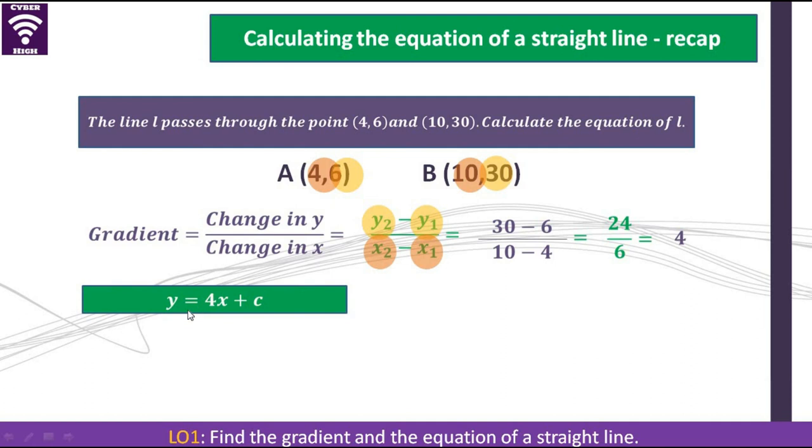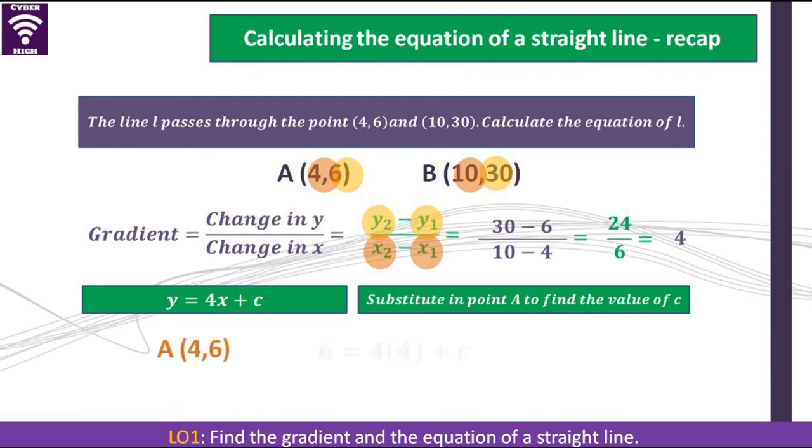It simply means we can now substitute our m into the equation, and we will have that. When we substitute the point A for c, we will now have a scenario where 6 is equal to 4 times 4, which is 16. When we subtract, we'll get c is equal to negative 10. Since c is equal to negative 10, we can now substitute that into our main formula, which will now be y is equal to 4x minus 10.